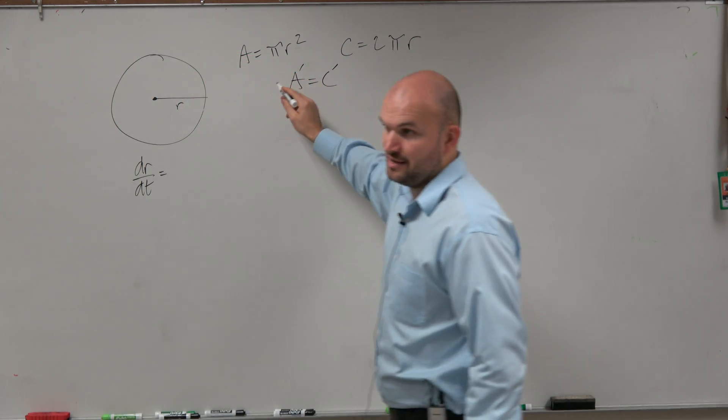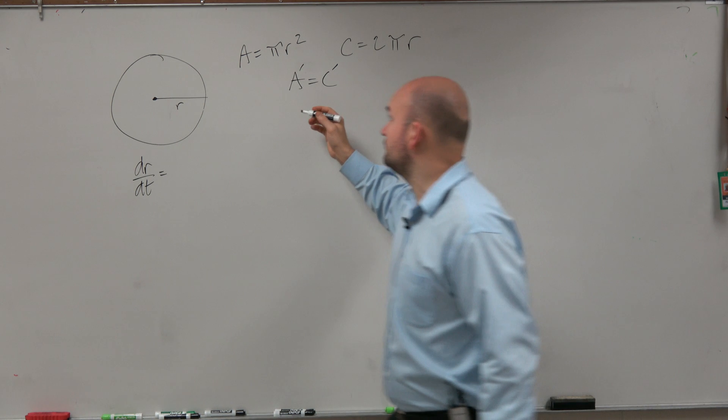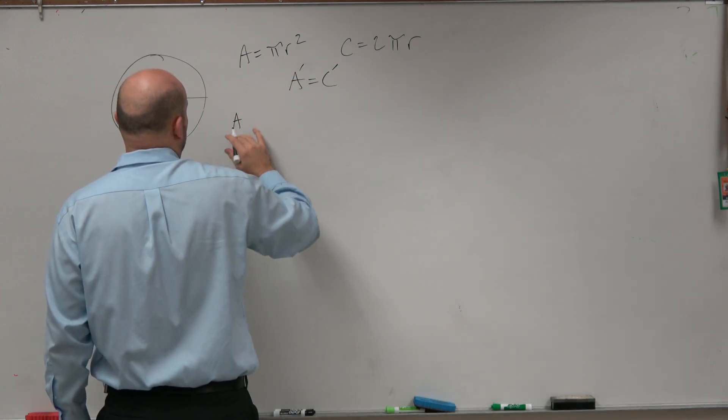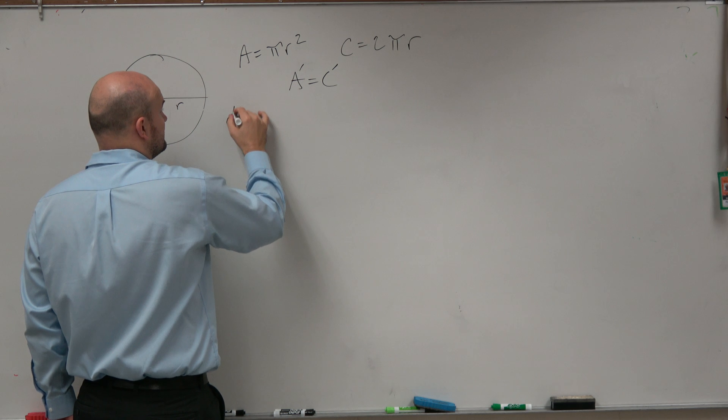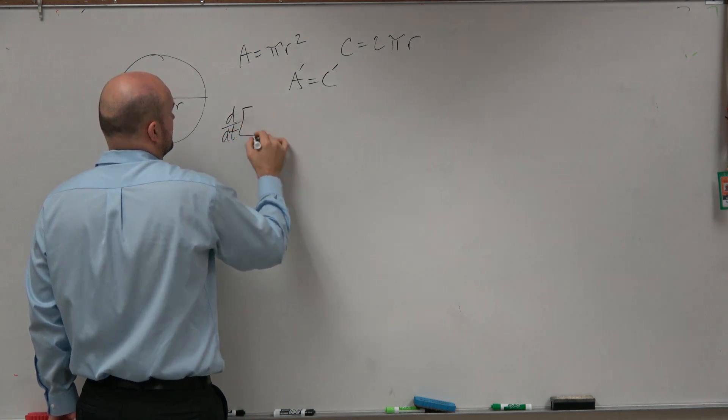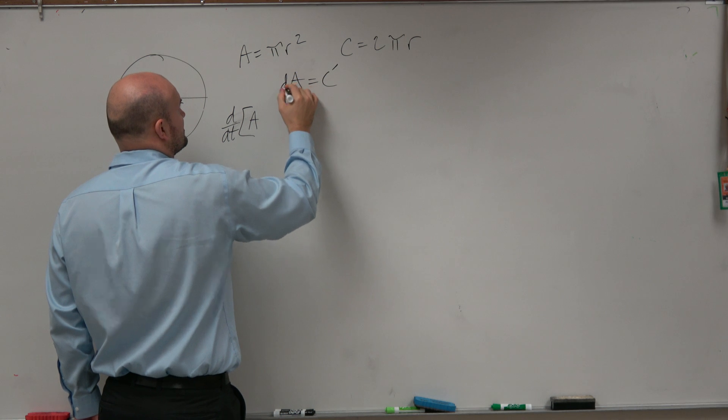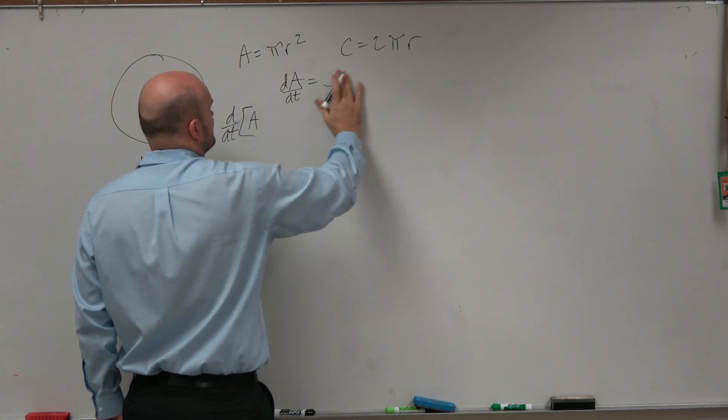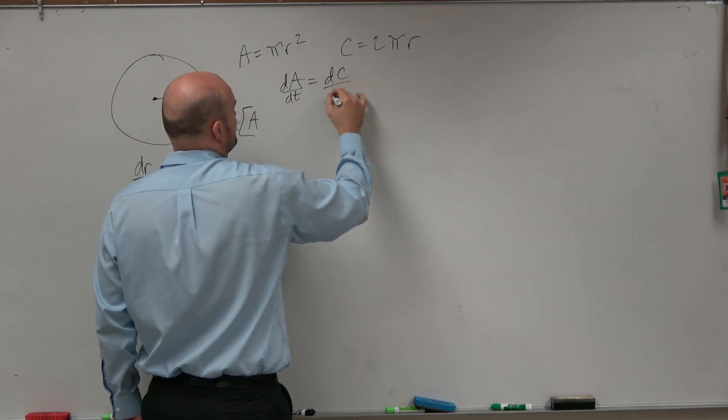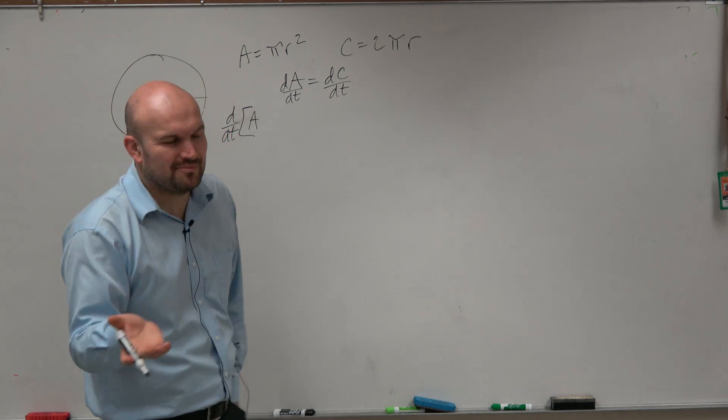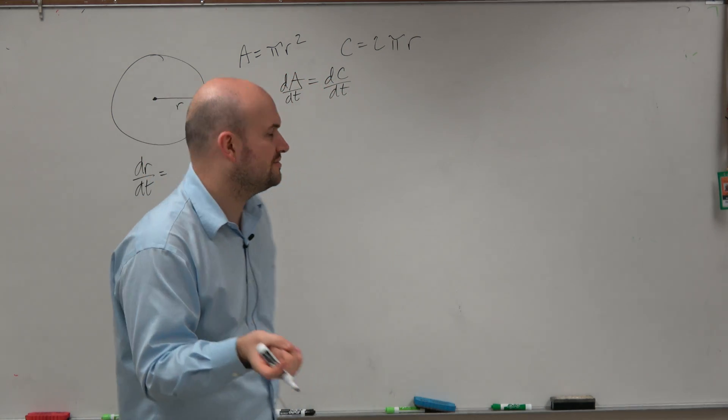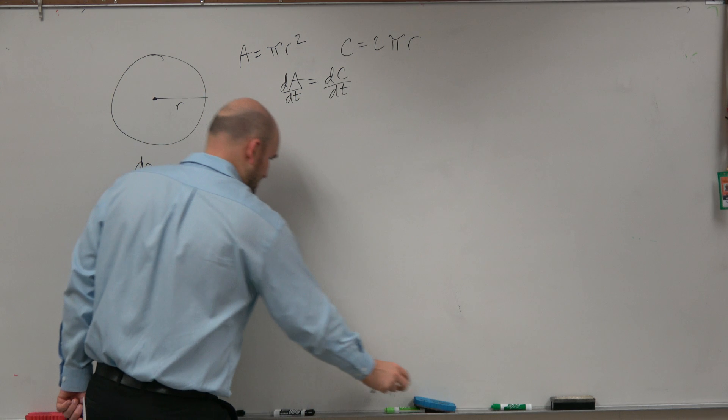So if I'm trying to find A prime is equal to C prime, well, first thing we want to do is let's figure out what A prime is now with respect to T. And actually, I should probably write this as dA/dT. It's actually equal to dC/dT. It's not really A prime. It's with respect to T. So it probably should be a little bit more better mathematical with that.